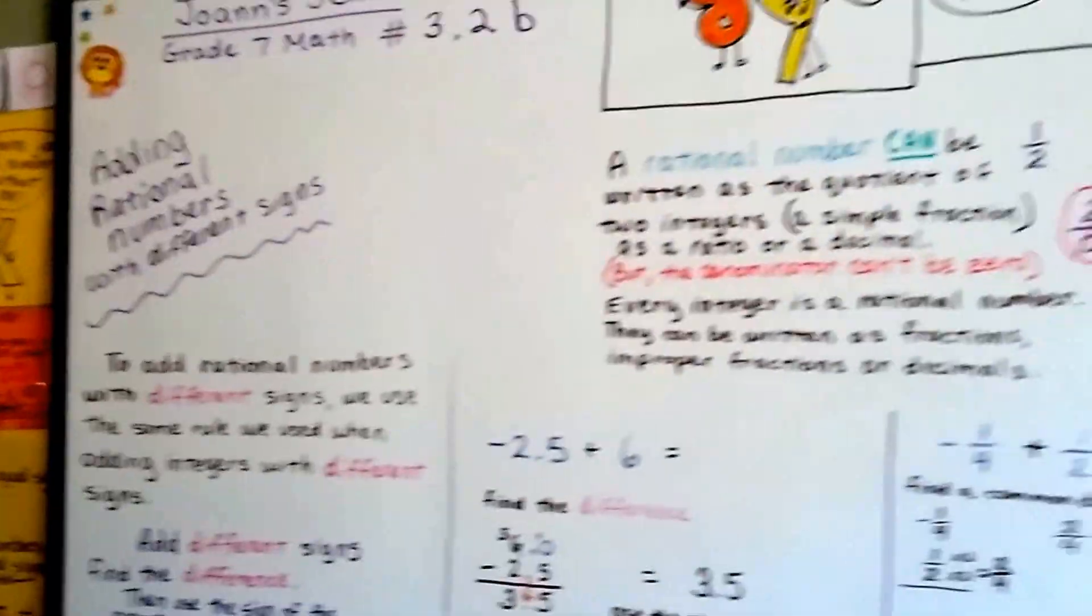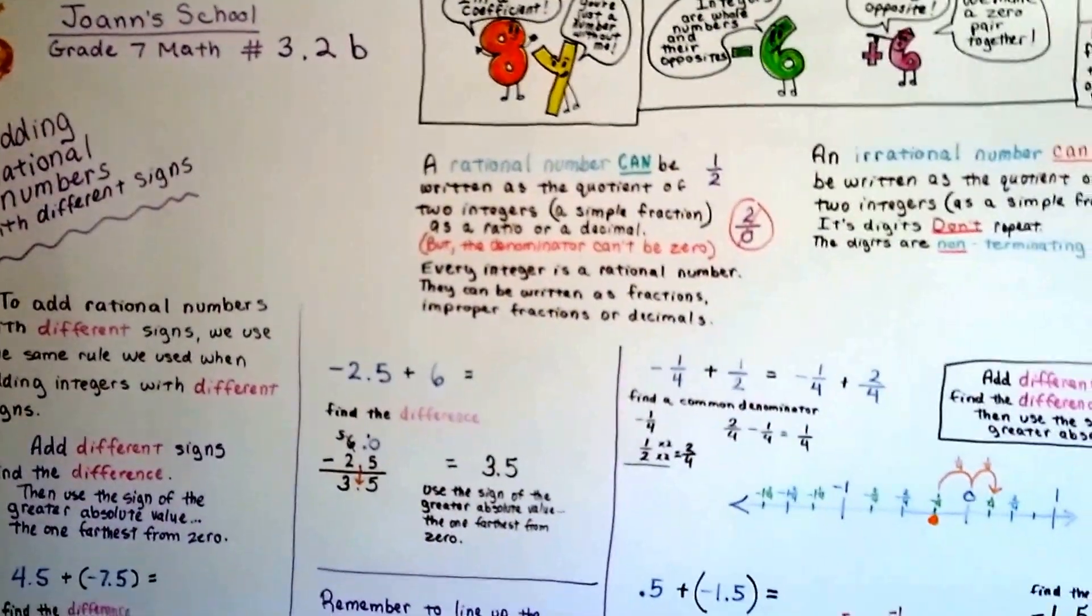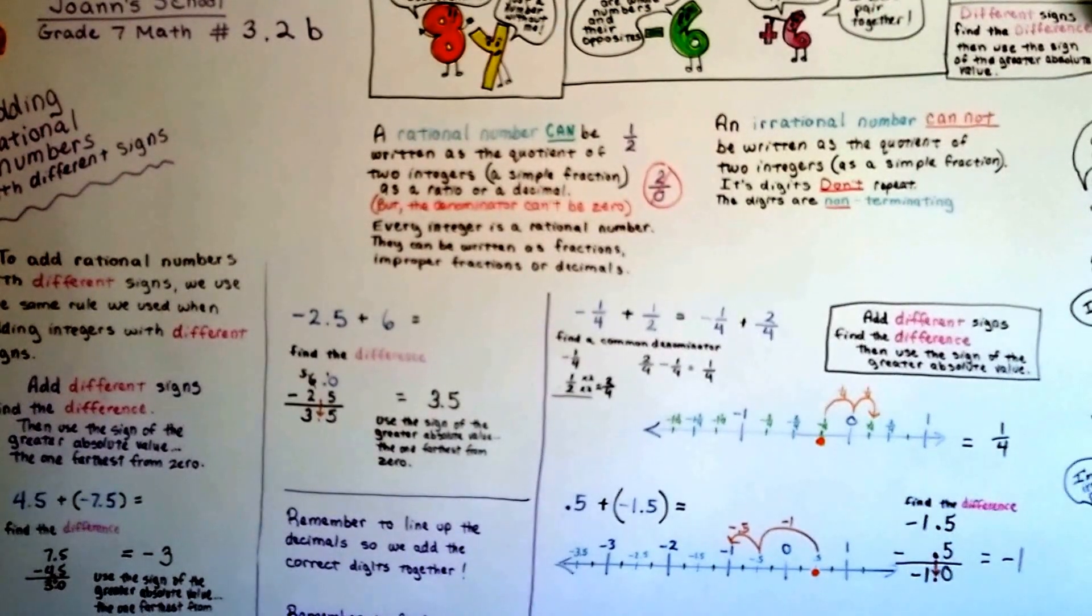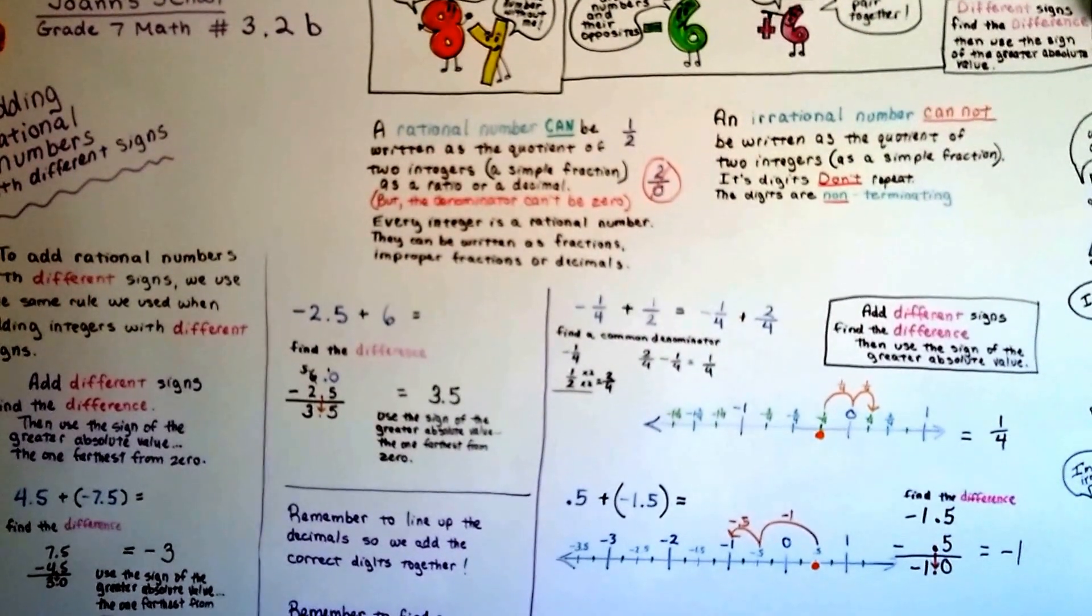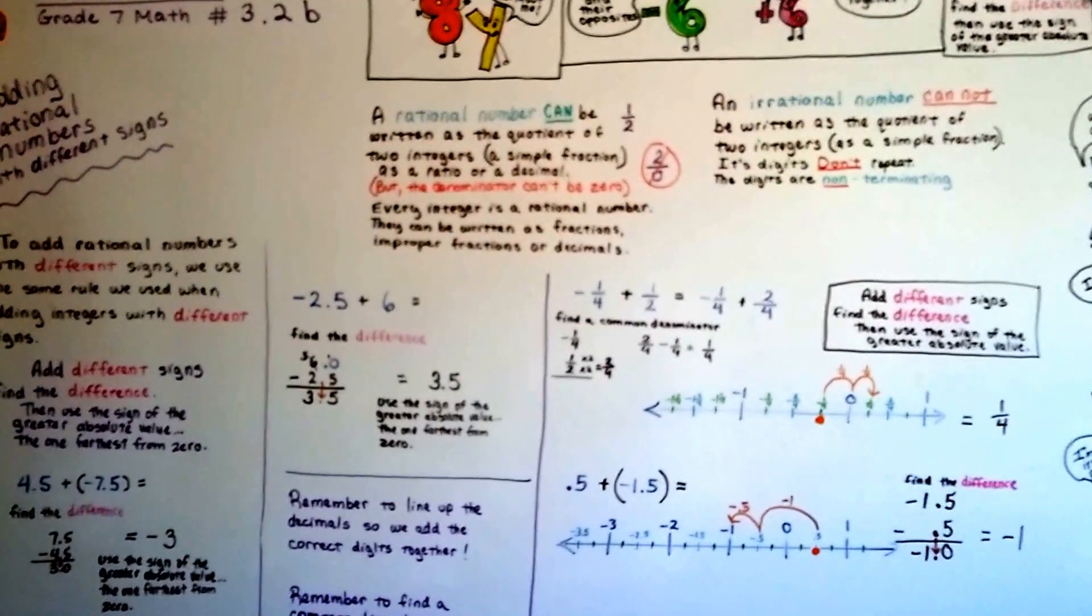So, now, in our next video, for 3.2c, we're going to talk about the additive inverse, okay? So, we're still in the same unit in the book, all right? 3.2. We're just going to 3.2c. Okay, I'll see you there. Bye.